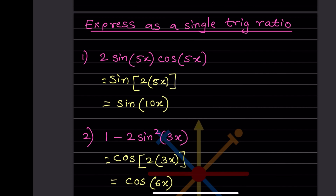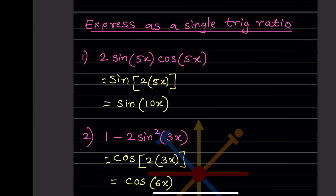We have 2·sin5x·cos5x. Both terms share the same angle, so we recognize this as the formula for sin2θ, where θ = 5x.